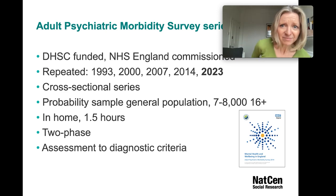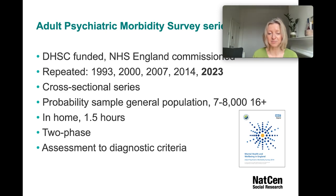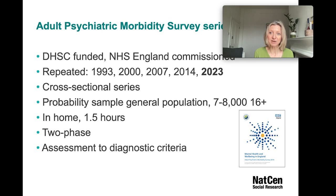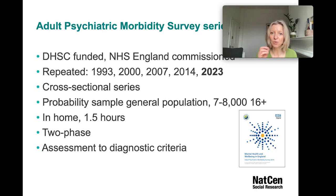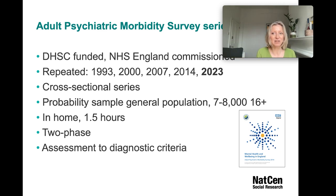My focus today is on the Adult Psychiatric Morbidity Survey series. This is also funded by the Department of Health and Social Care and commissioned and overseen by NHS Digital, now NHS England. The first one was carried out in 1993 when the government realised we know very little about the prevalence, inequalities, and treatment gap in relation to mental health. The methods have remained remarkably consistent over time, and because the survey has been carried out every seven years or so, we can really look at change over time. These are repeated cross-sectional surveys — while longitudinal studies are good for causal inference and individual trajectories, these surveys are really good for looking at change at the population level and temporal trends.